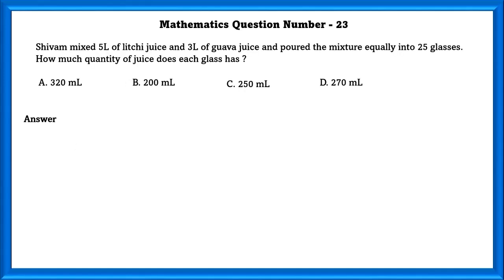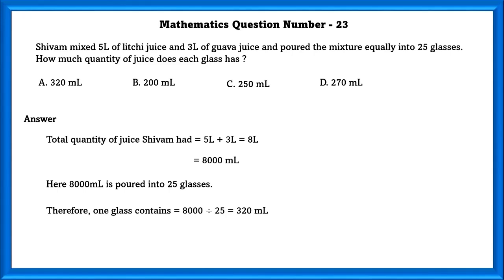Mathematics question number 23. Shivam mixed 5 liters of litchi juice and 3 liters of guava juice and poured the mixture equally into 25 glasses. How many quantities of juice does each glass have? First, we have to find the total quantity of juice Shivam has, which is equal to 8000 ml. He poured 8000 ml into 25 glasses, which is equal to 320 ml in each glass.